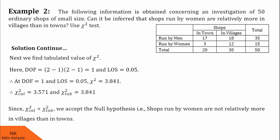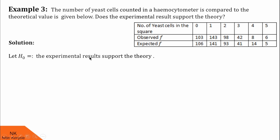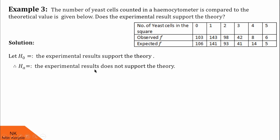I hope guys you understood this example too. Now, let us proceed for our next example. The number of yeast cells counted in a hemocytometer is compared to the theoretical values given below. Does the experimental result support the theory? Here is the given data. We are given the observed frequencies of number of yeast cells and below, expected frequencies are given. Let us proceed for the solution. First, we define H0 and HA. H0 should be: the experimental results support the theory. That means there is no significant difference between the observed frequency and the expected frequency. Therefore, we say experimental results support the theory. HA will be opposite of this: the experimental results do not support the theory.